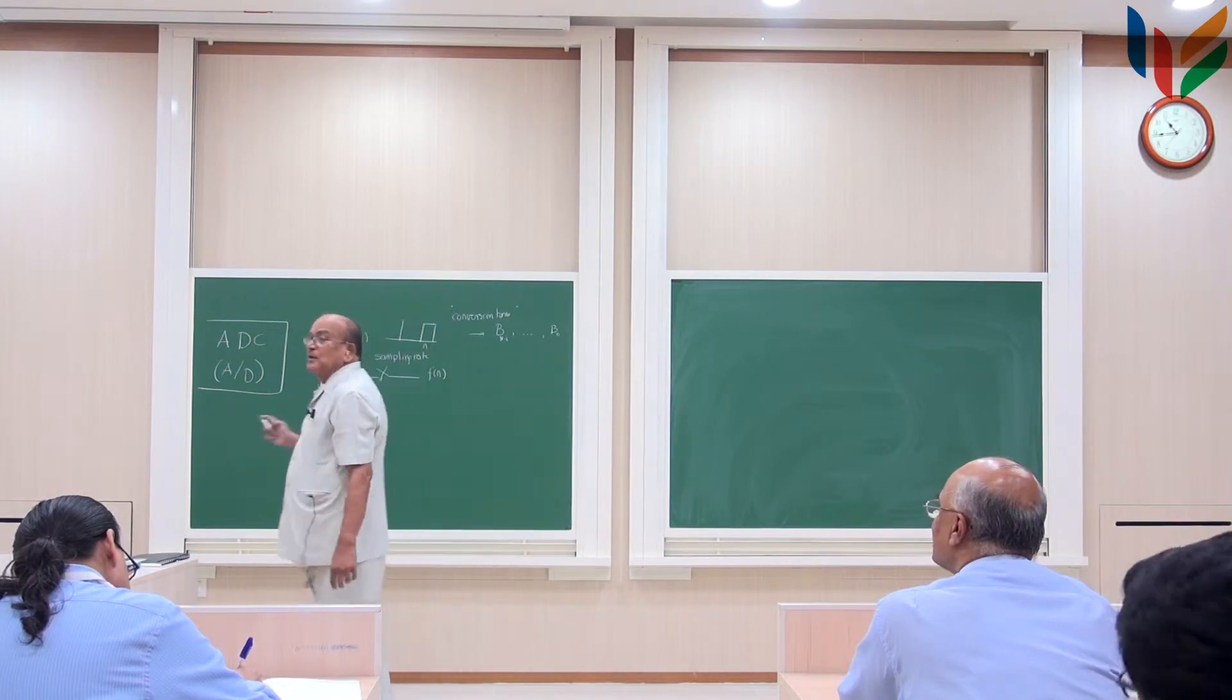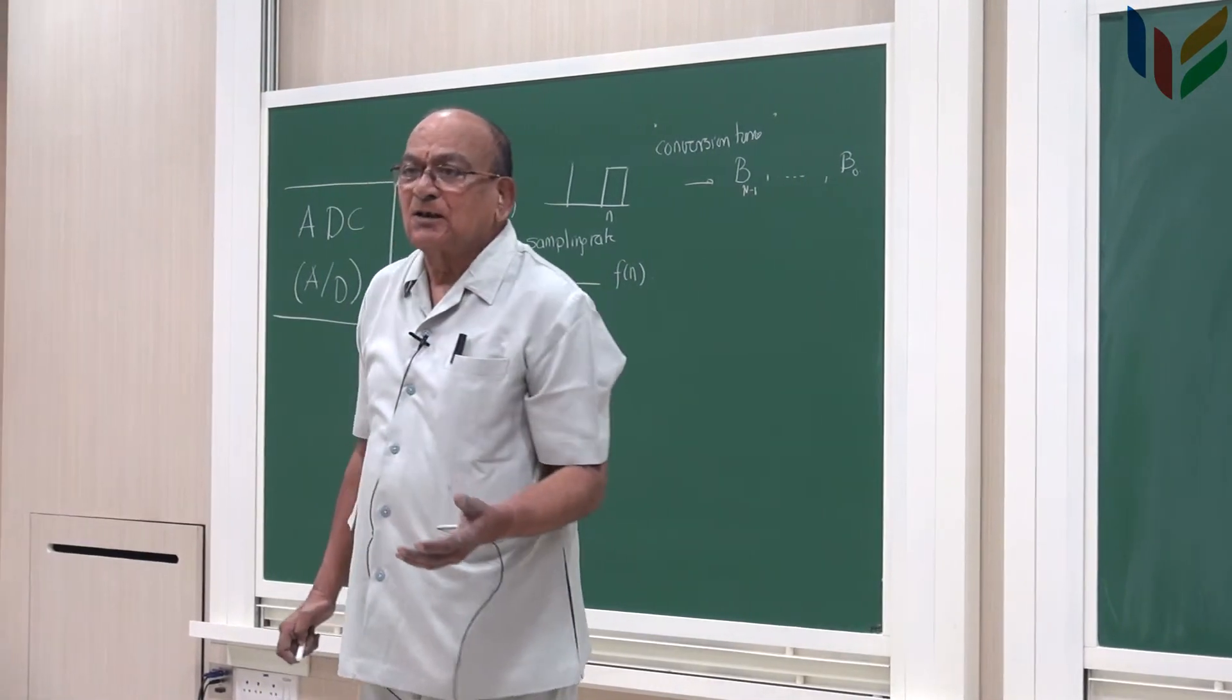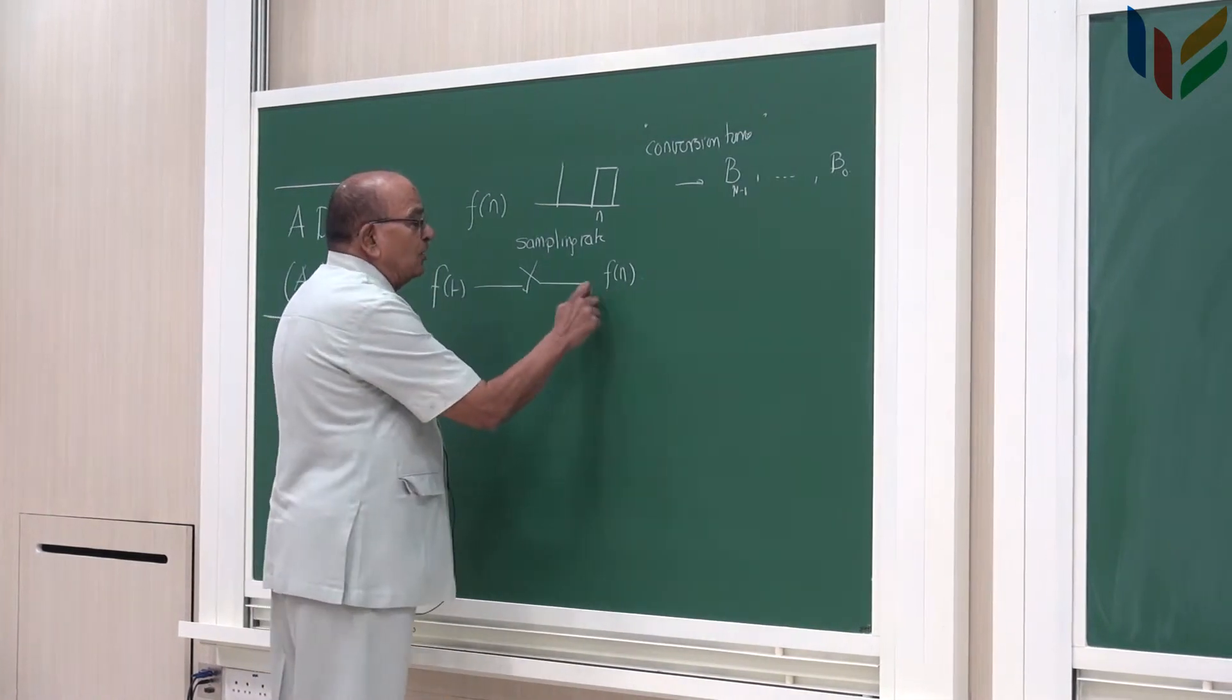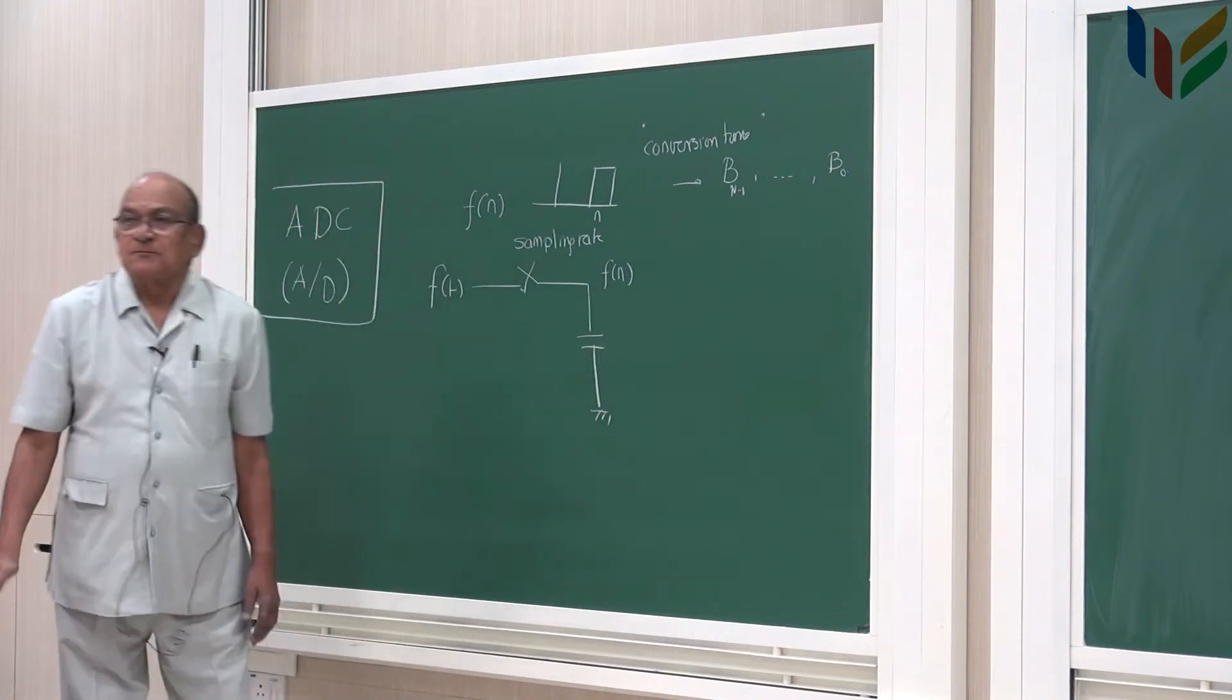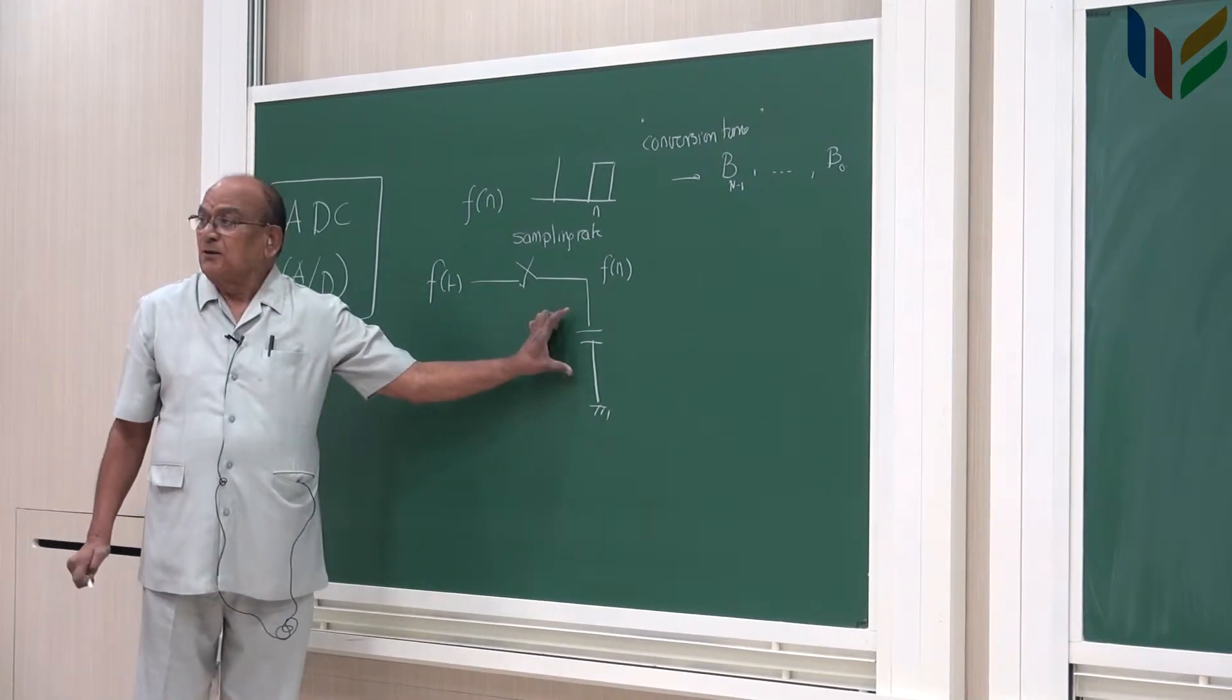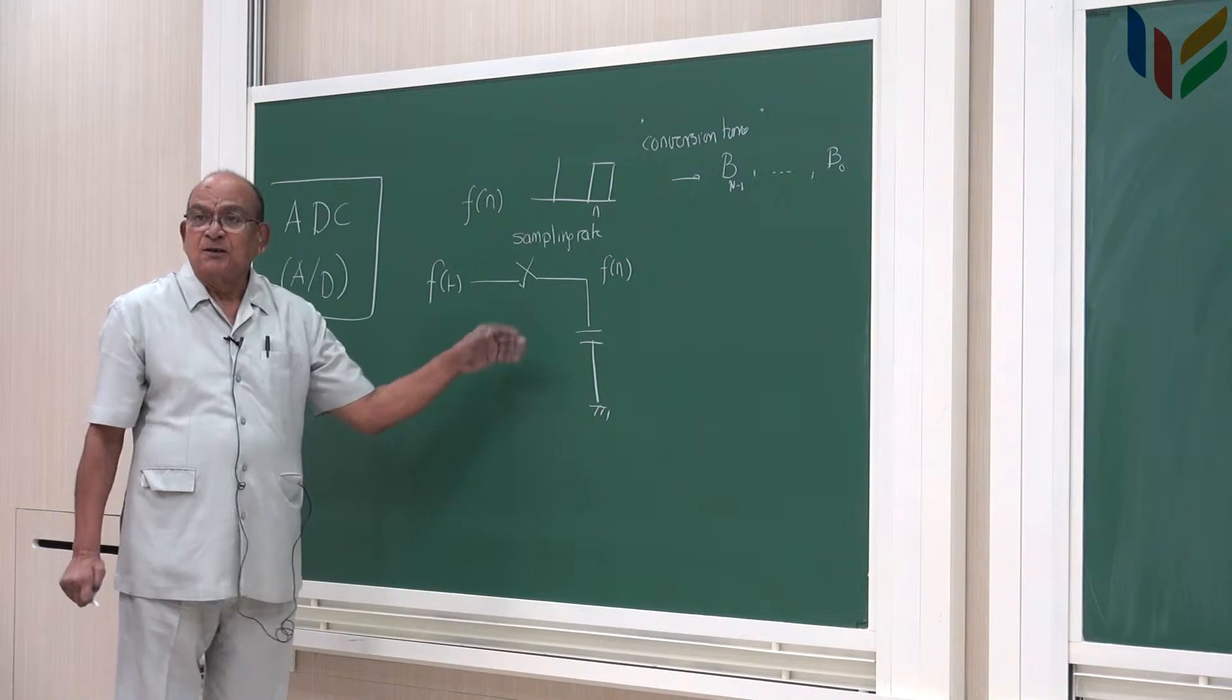This is called the time required for this is called conversion time, which is the specification of an A to D converter. The A to D converter specifies this is the amount of conversion time. Obviously, the conversion time increases if the number of bits are larger. It is not too obvious but generally it increases. When the number of bits are larger, the conversion time also increases. Anyway, we will come to that later. I need to store this somewhere. What we do is we store it on a capacitor.